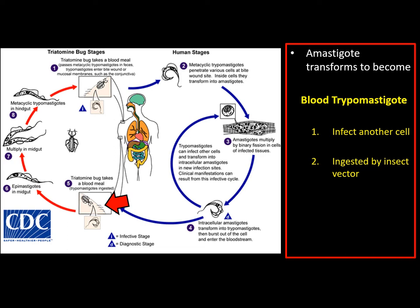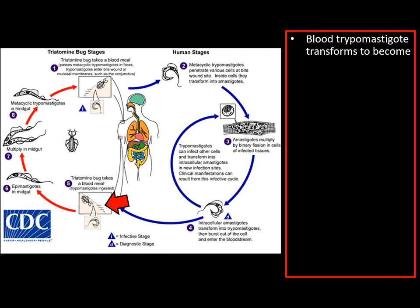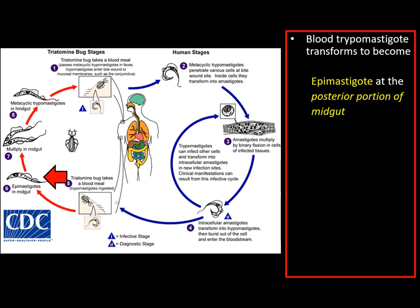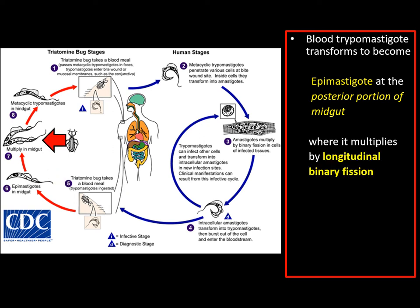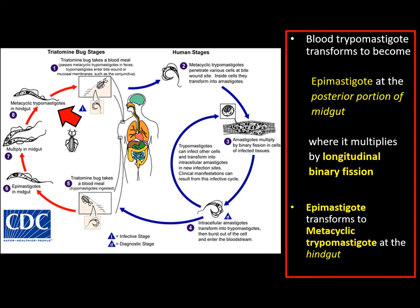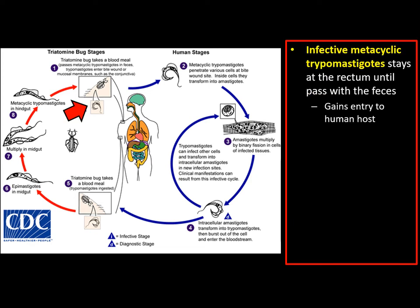Once the blood trypomastigote is ingested by the triatomine bug, it passes through the posterior portion of the mid-gut where it transforms to become epimastigote. Epimastigote multiplies at the mid-gut through longitudinal binary fission. These epimastigotes then transform to become metacyclic trypomastigote once at the hindgut. Infective metacyclic trypomastigote stays at the rectum until passed with the feces, then gains entry to the human host, and the cycle continues.